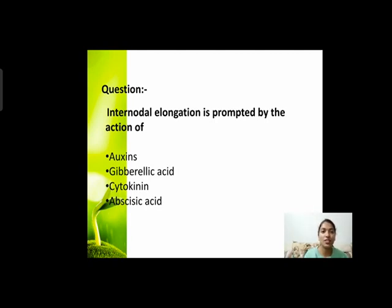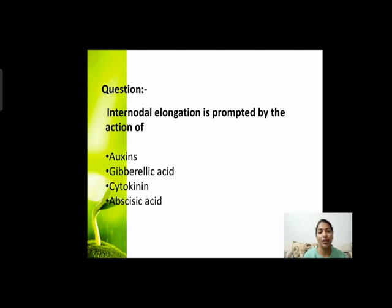Next question: internodal elongation is promoted by action of? आपको पता है internod क्या होता है — दो nodes के बीच की जो length है, that is known as internod। Internodal elongation, यानी stem की length को increase करने वाला plant hormone कौन सा होता है? Options हैं: auxins, gibberellic acid, cytokinin, and abscisic acid।